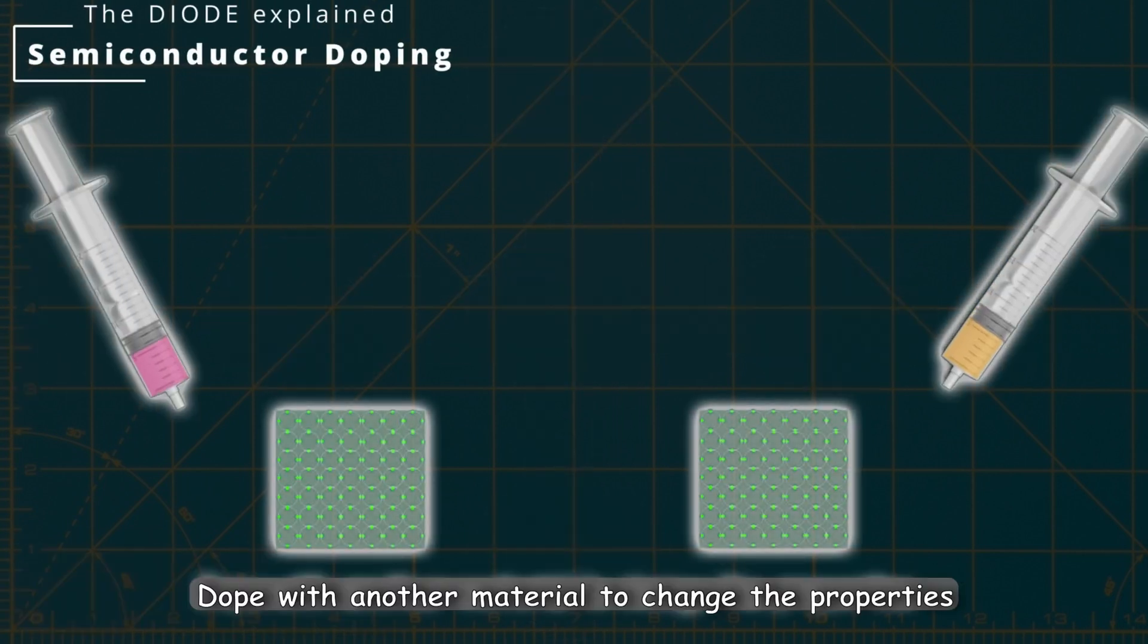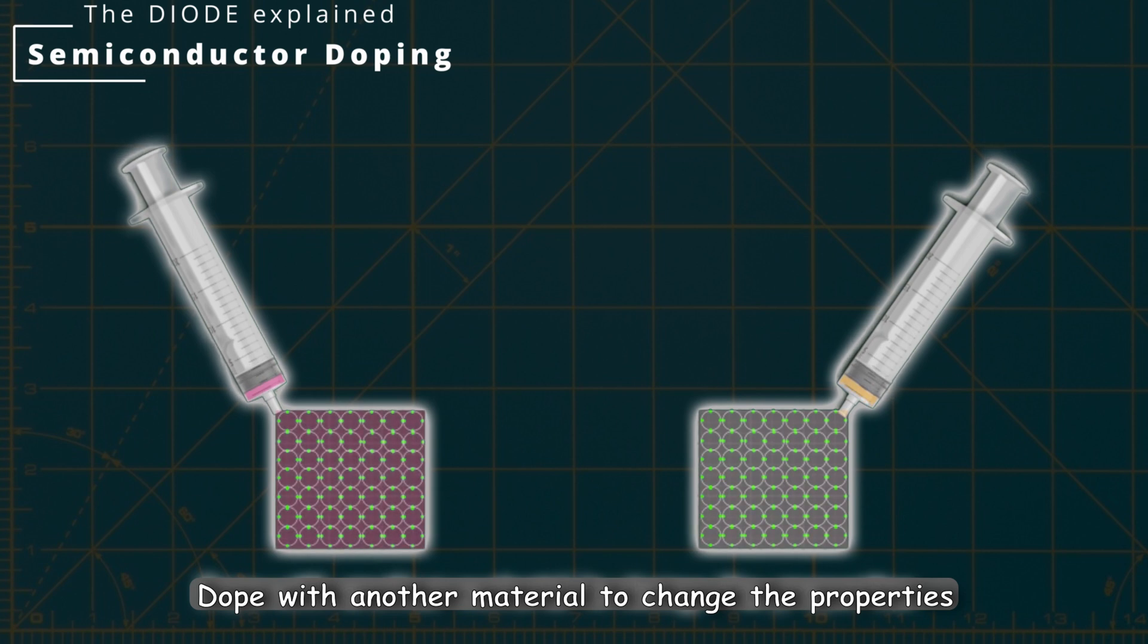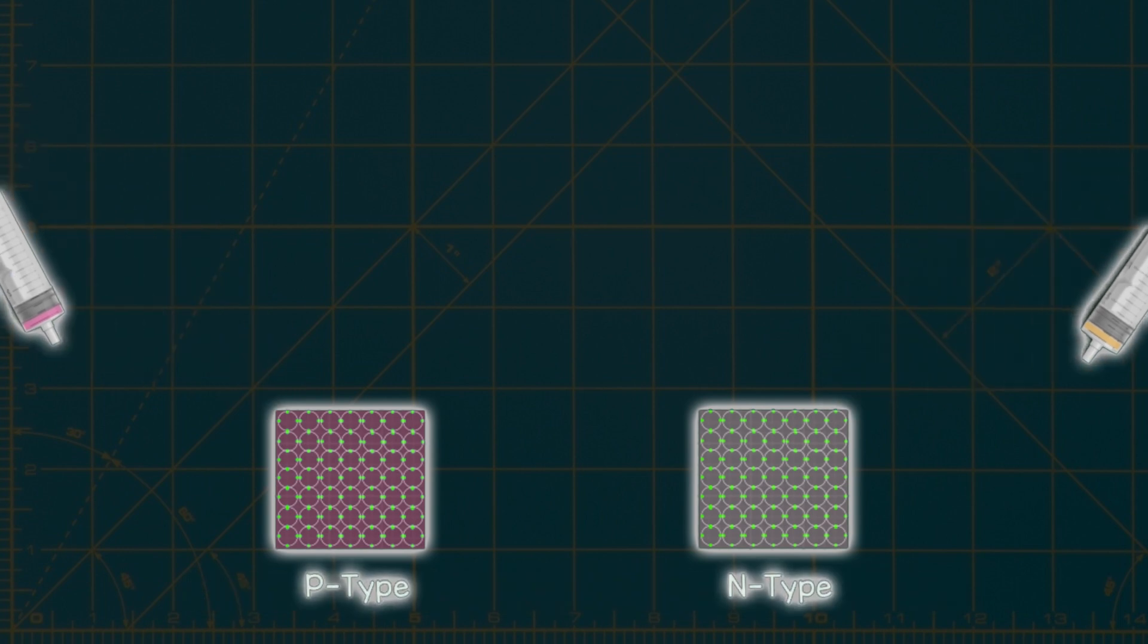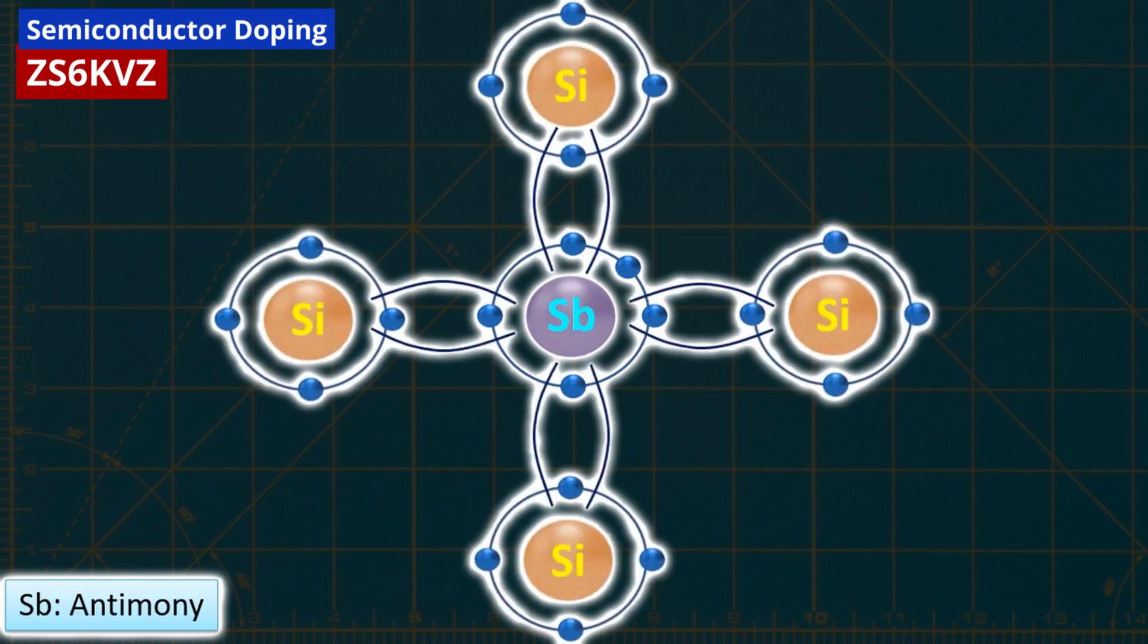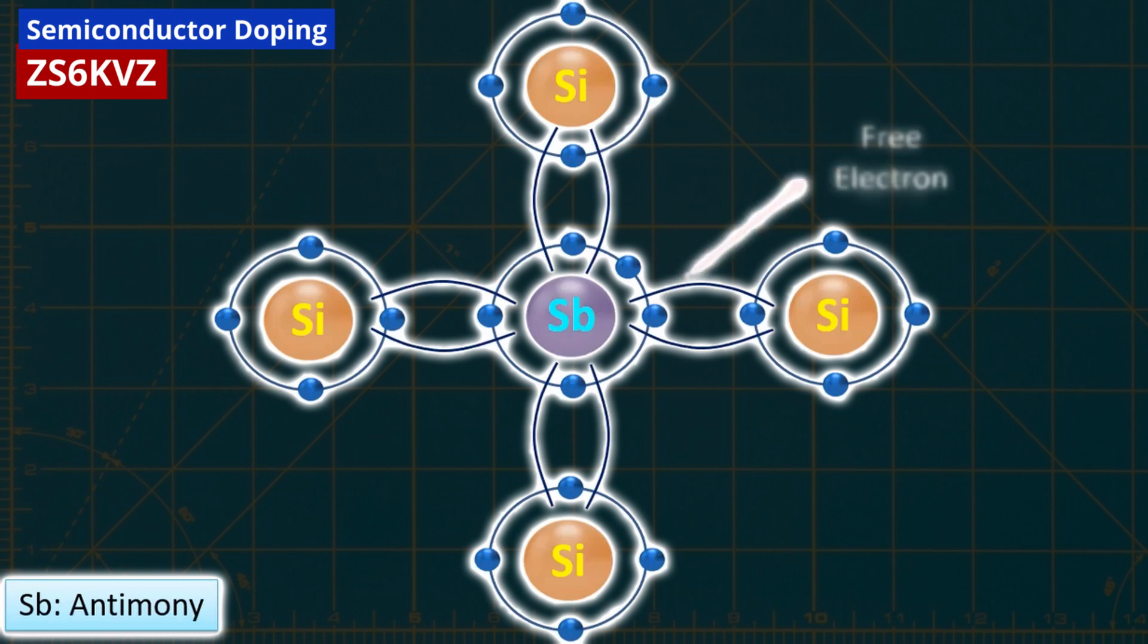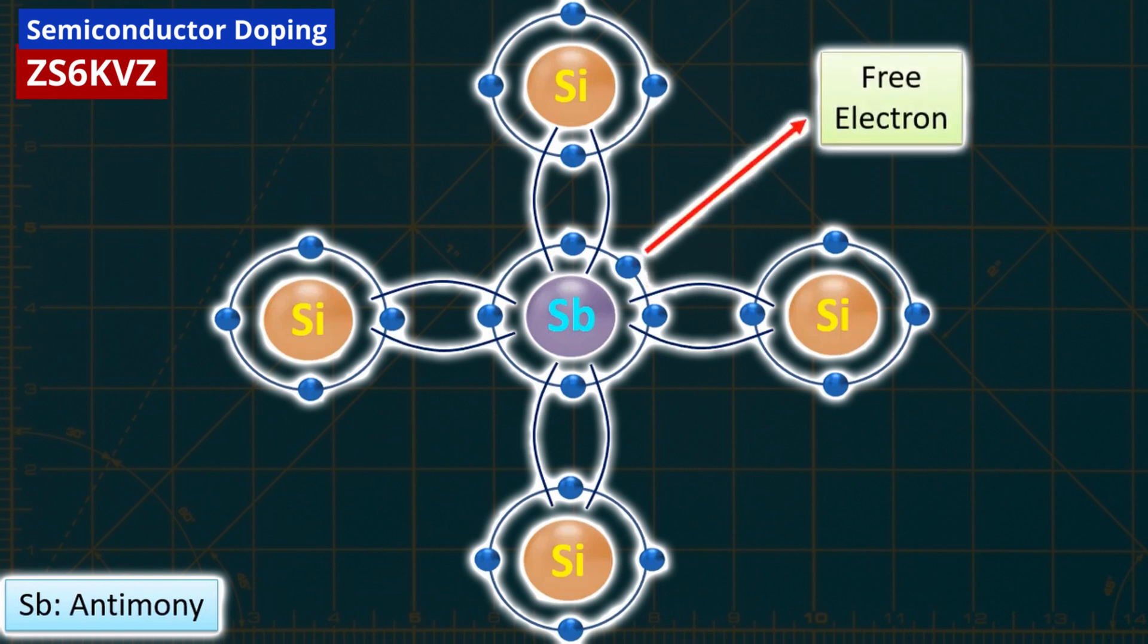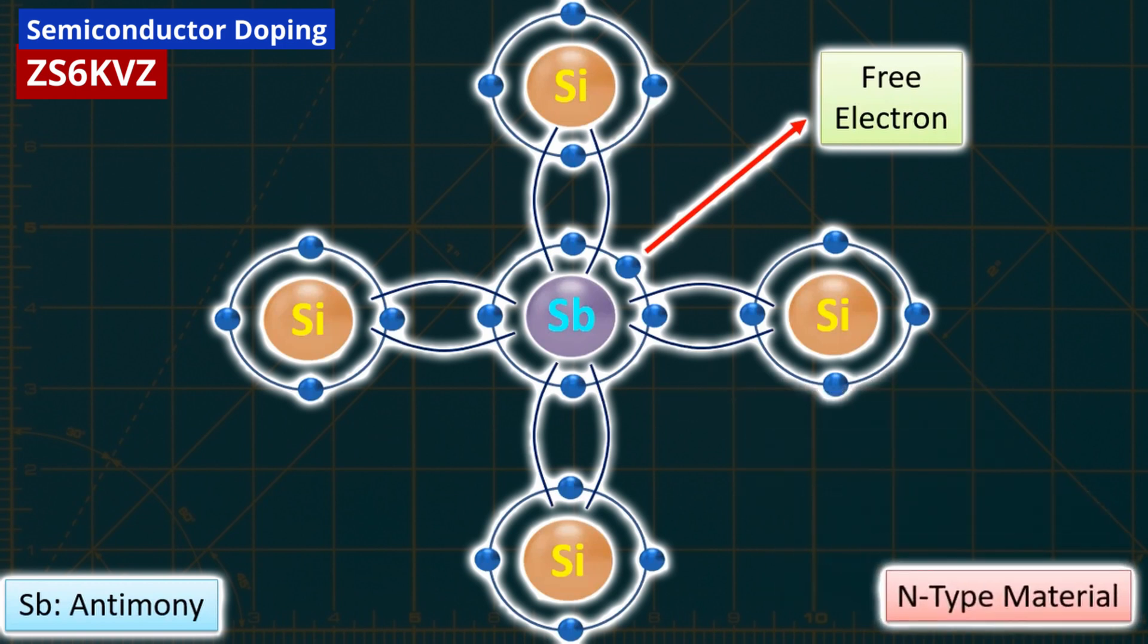These newly formed materials are called n-type and p-type materials. Now, let's understand what n-type and p-type materials are. Let's consider the element antimony (Sb), which has 5 electrons in its outermost orbital. Antimony is an insulator due to its 5 electrons in the outermost orbital. However, when we dope an antimony atom with silicon, 4 electrons in antimony's outermost orbital form bonds with 4 silicon atoms, leaving 1 electron uninvolved. This doping process creates a new structure called n-type material.